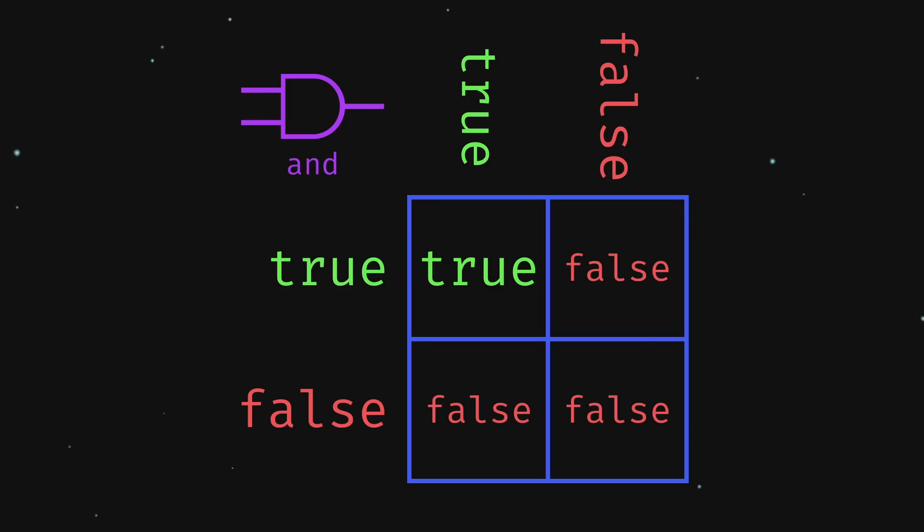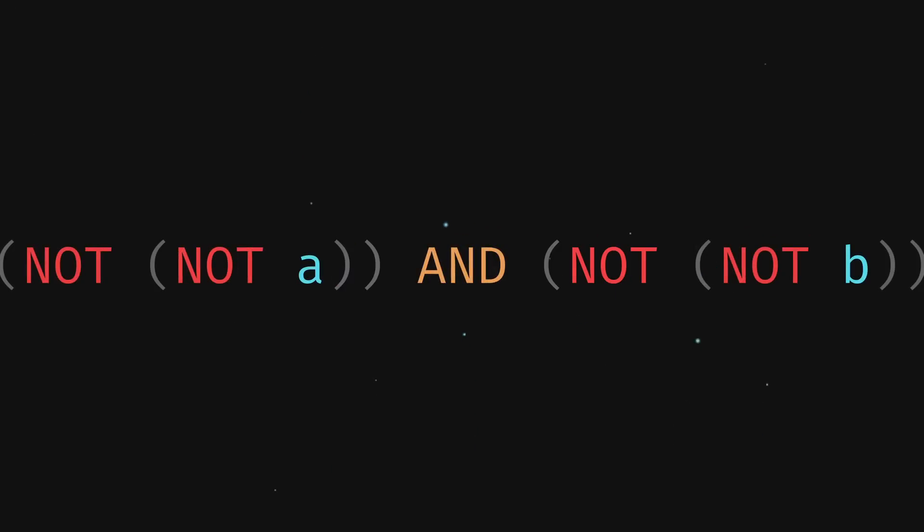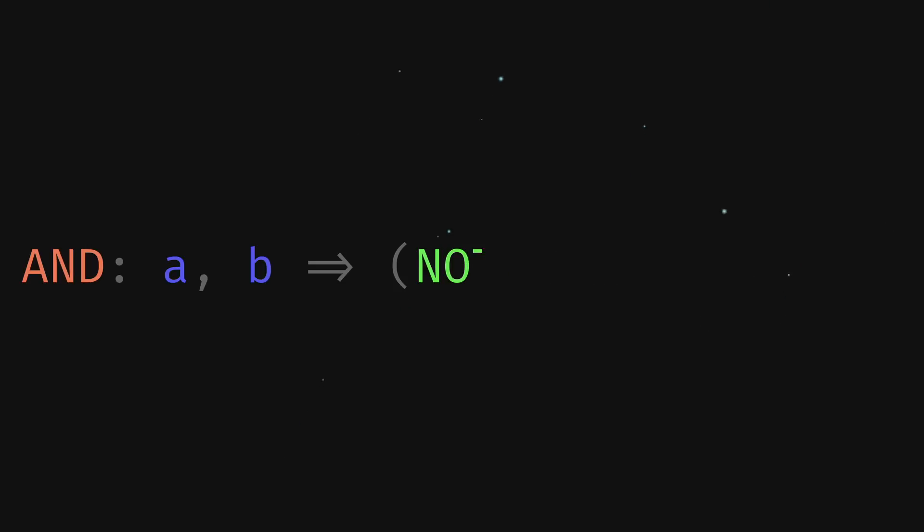Finally, we see that the truth table of the AND gate is a symmetrical flip of NOR. Thus, by applying not to each input before sending it to NOR, we find that the AND gate is simply not a NOR not b.